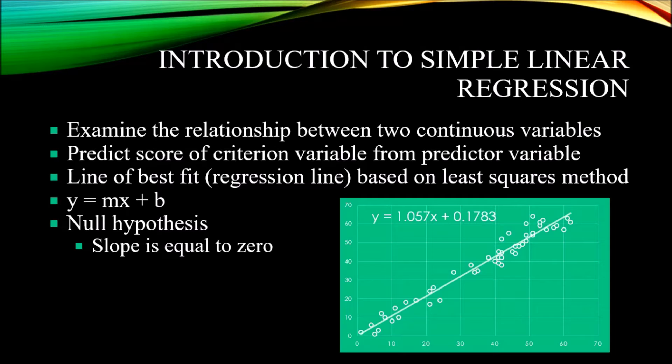This regression line is based on what's referred to as the least squares method. Now to understand the least squares method, first you have to understand the concept of a residual. So when we have these data points plotted on a graph and we place a line on that graph, the points would be the actual scores that we have, the observations from a predictor variable, and the line would represent the predicted score. The difference between the actual observations and the predicted score on that line is residual, otherwise known as error.